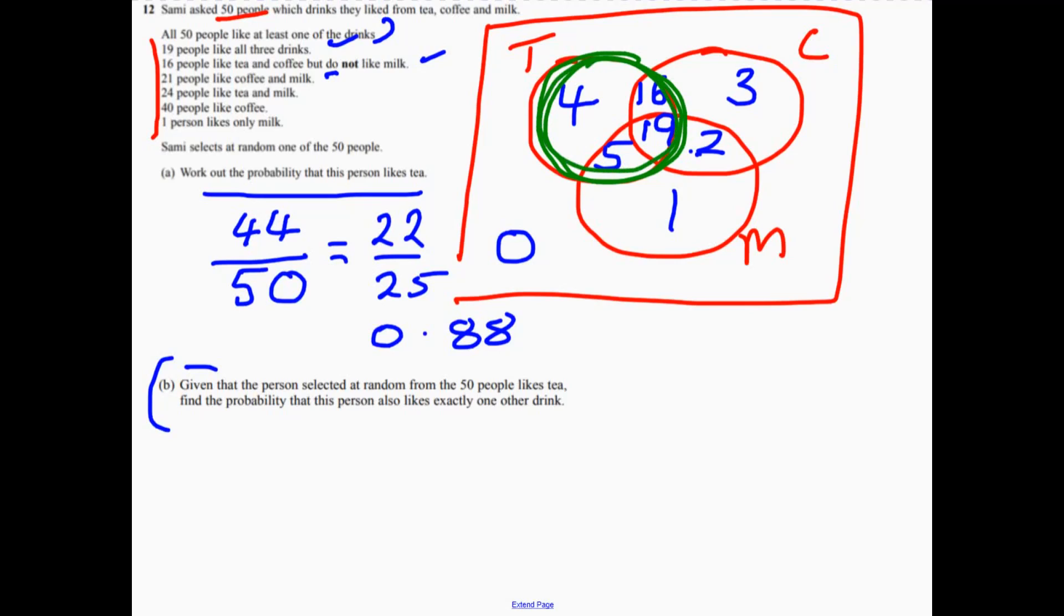Find the probability that this person also likes exactly one other drink. So of those 44 people in the tea circle, how many of them like exactly one other drink? Well, that's the 5 and the 16. 21.